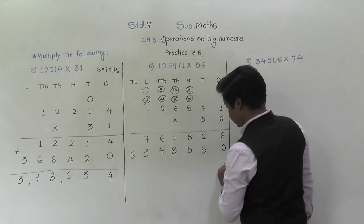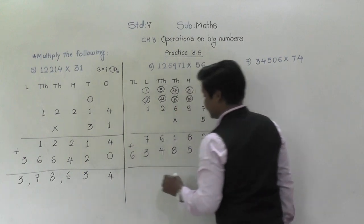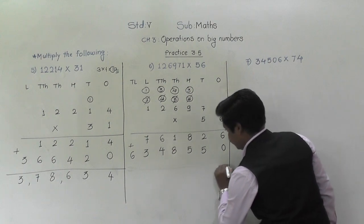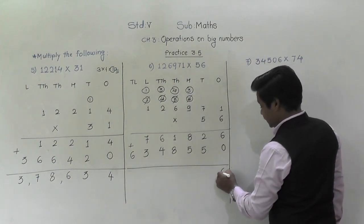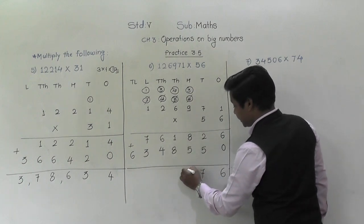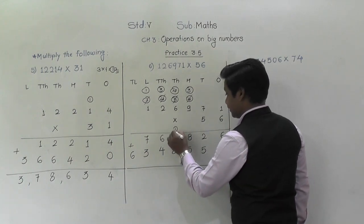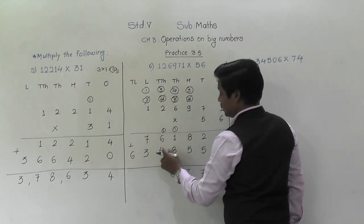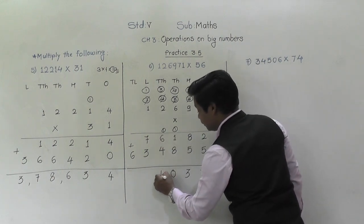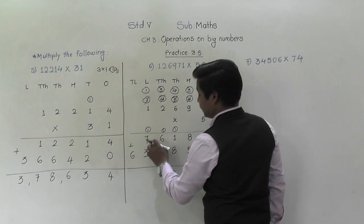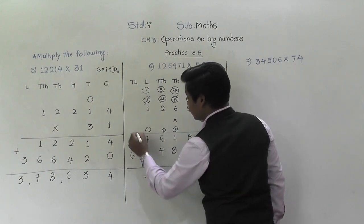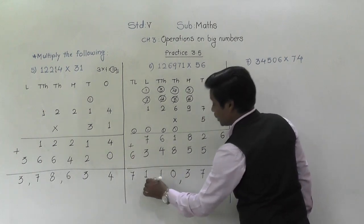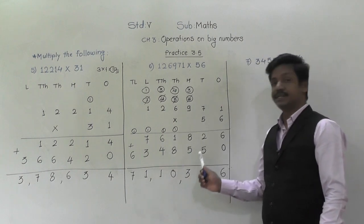Let's add it. Six plus zero is six. Five plus two is seven. Eight plus five is thirteen — three will come down, one will be carried. Eight plus one and one is ten — zero will come down, one will be carried. Six plus four and one is eleven — one will come down, one carried. Seven plus three and one is eleven — one will come down, one carried. And six plus this carried one is seven. So the answer is 71,10,376.